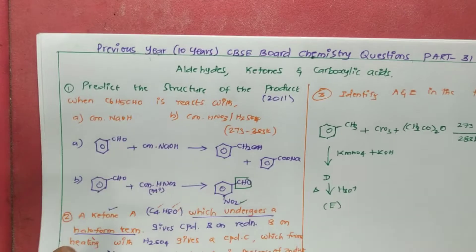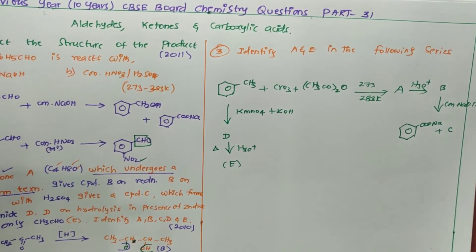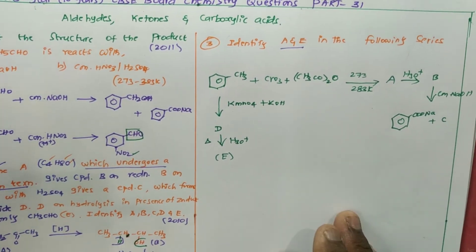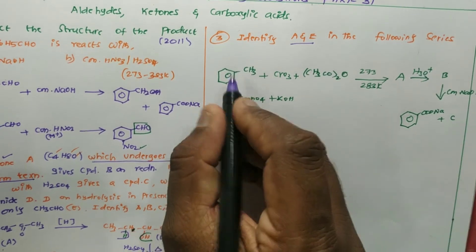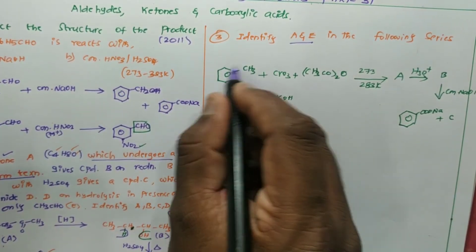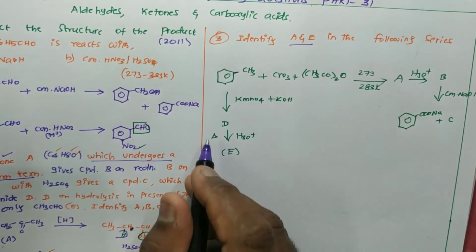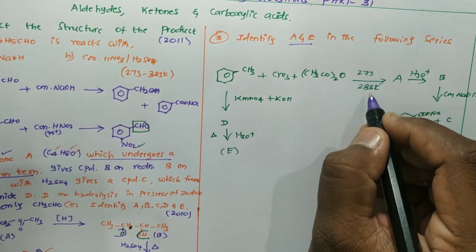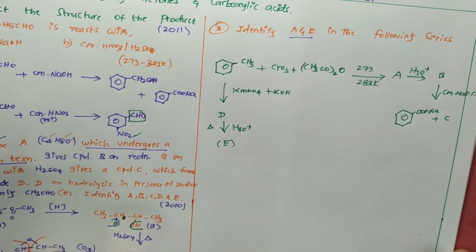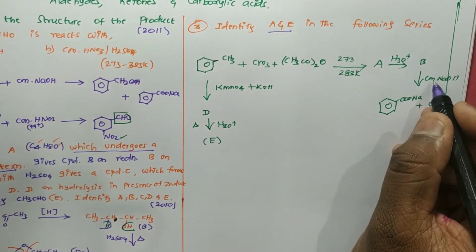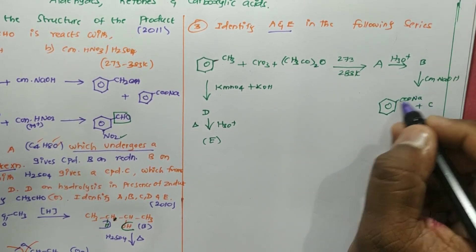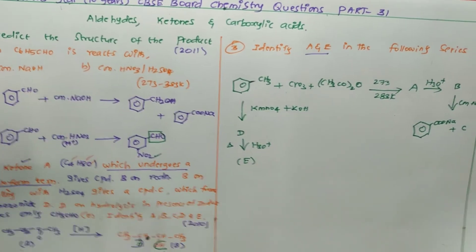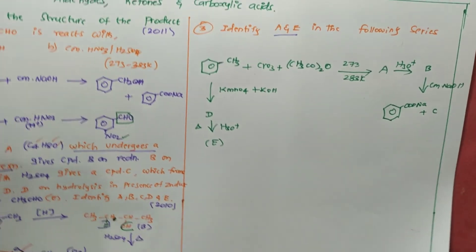Next is the third question: identify A and E in the following sequence. They are asking to find out A and E, but we have to find out everything to identify those compounds. The starting compound is toluene (methyl benzene). Methyl benzene undergoes anhydrous oxidation in presence of certain compounds at a temperature of 273–283 K to give A. A on hydrolysis gives B, and B undergoes reaction with concentrated sodium hydroxide to give sodium benzoate and another product.